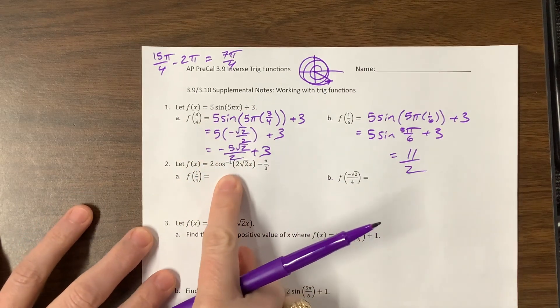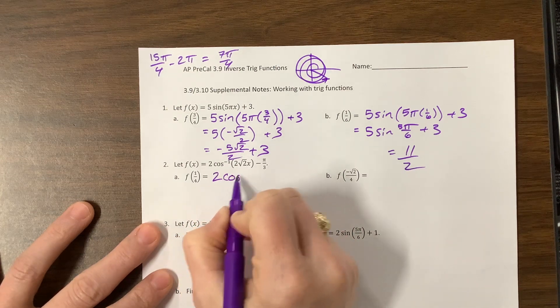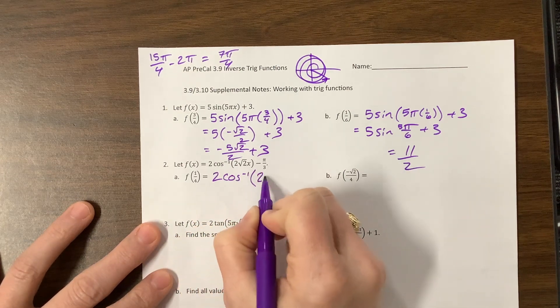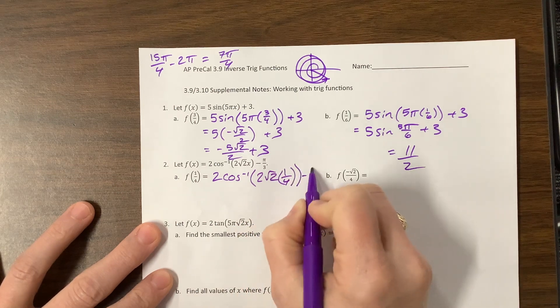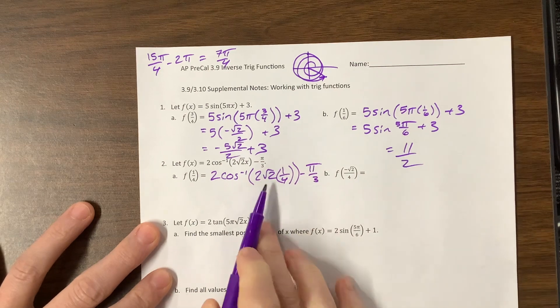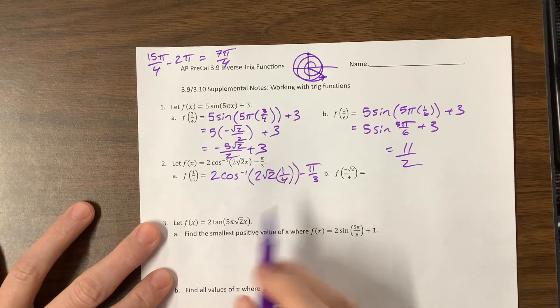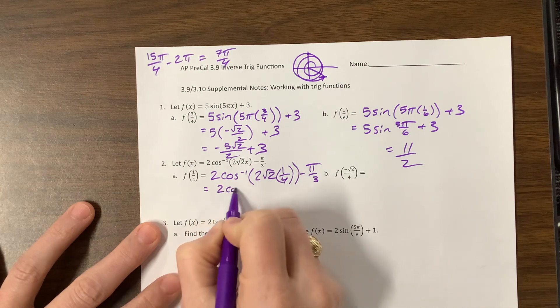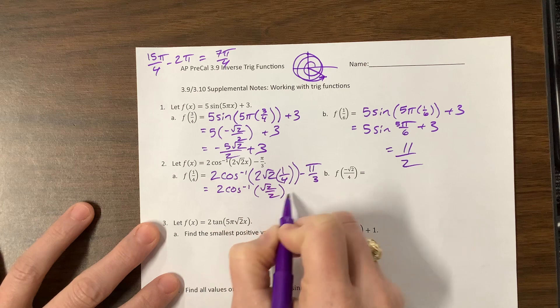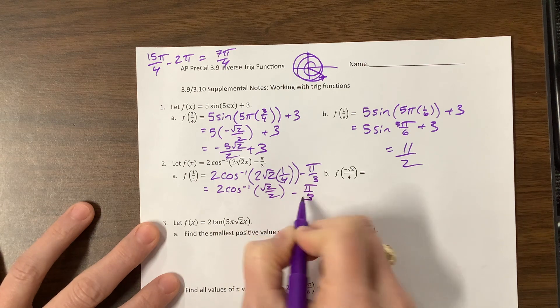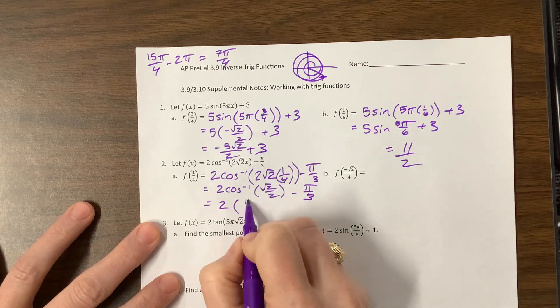The next type, so that was just a regular trig function. Now we're looking at an inverse trig function but doing something similar. I have 2 cosine inverse of 2√2 times 1/4. I don't know why I wrote it that way, minus π/3. This 2 will cancel with a 2, we'll divide there and this gives me √2/2. So here we are, 2 cosine inverse of √2/2 minus π/3.